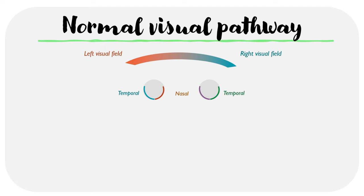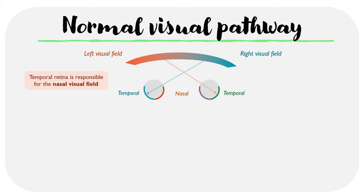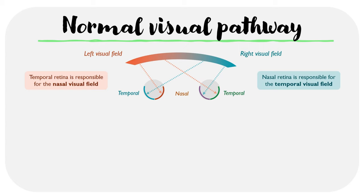One important concept to understand is that light rays from the center of your vision hit the temporal retina. In other words, the temporal retina is responsible for the nasal or central visual field. At the same time, light rays from the outer vision hit the nasal retina, so the nasal retina is responsible for the temporal or outer visual field. This is a very important concept as it makes things a lot easier when thinking about defects.